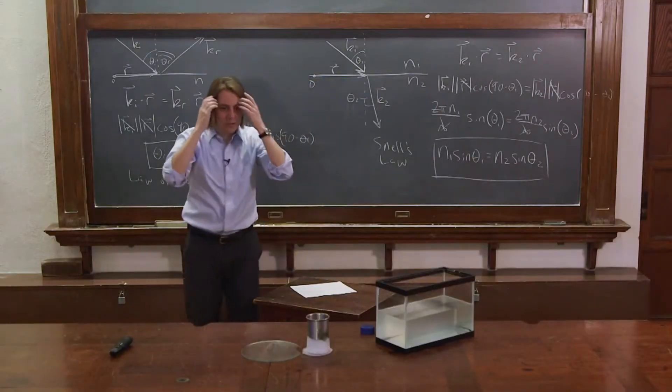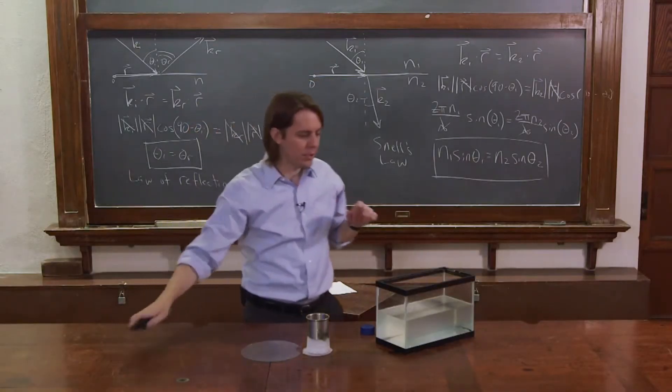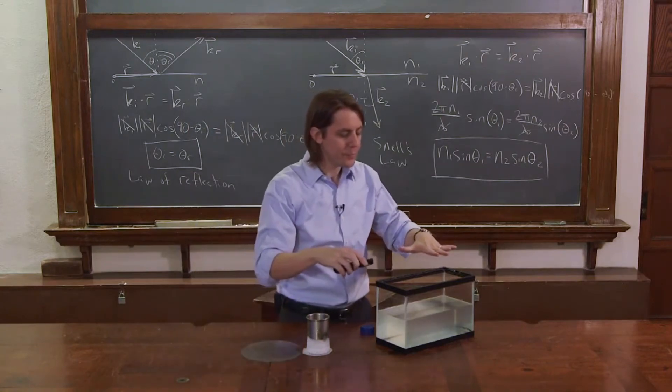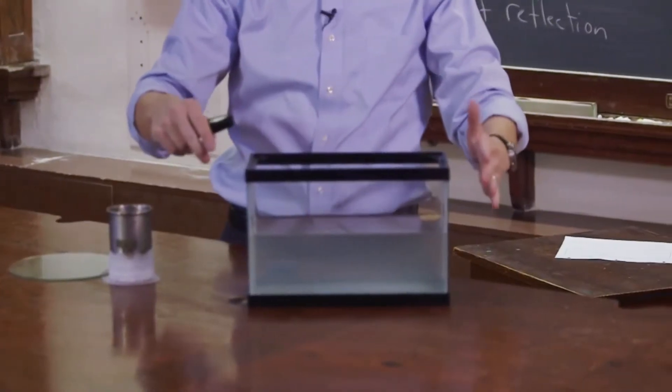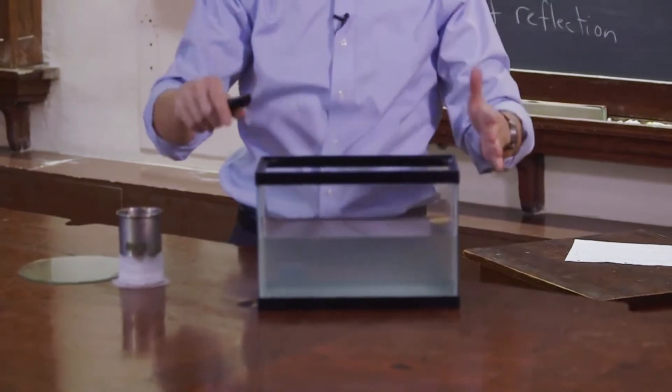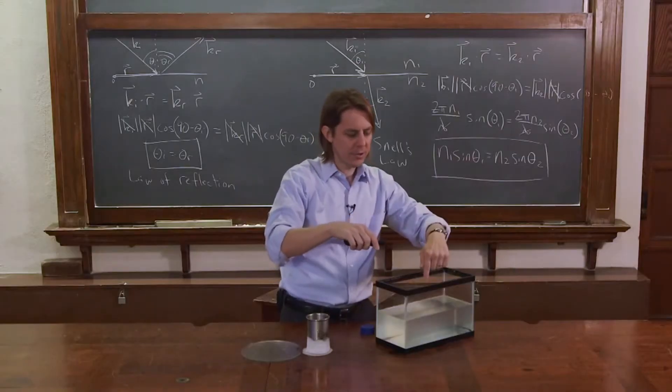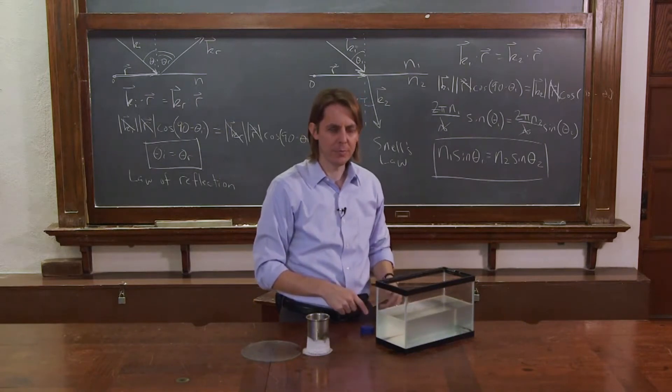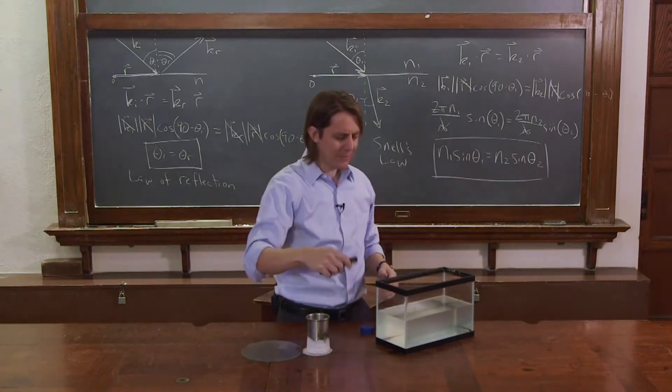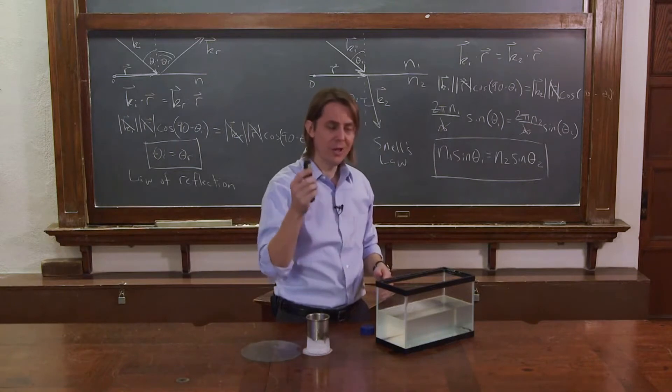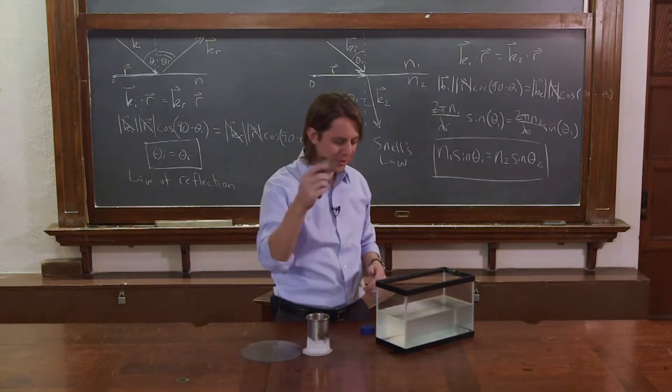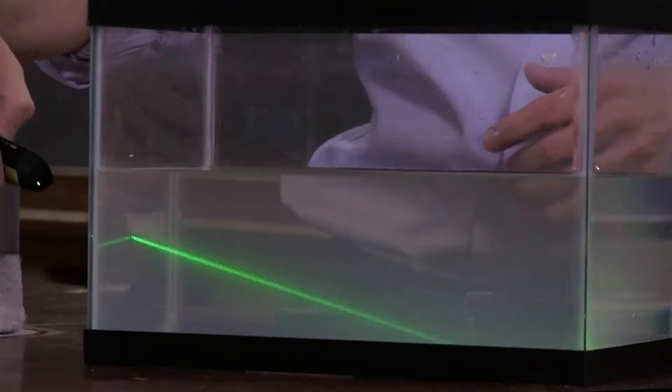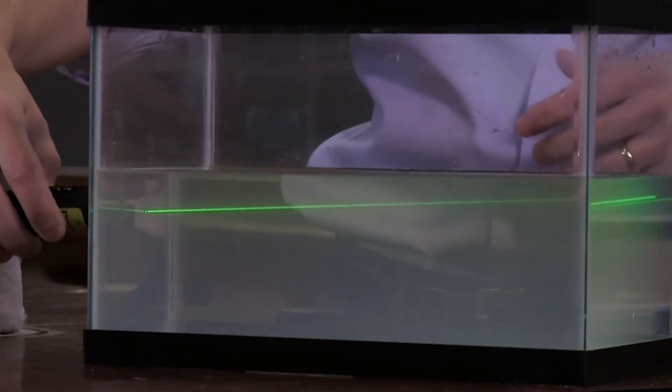And we can show you that this will happen here. So here I have a boundary between two dielectric media. I have air here, n equals 1, and I have water here, which is about n equals 1.33. So I have my 532 nanometer vacuum wavelength plane wave here, and I can send it into the glass, but you can't see it in the air.